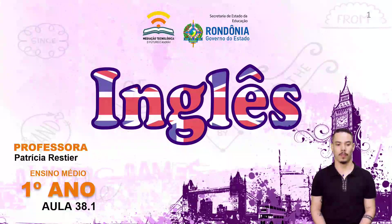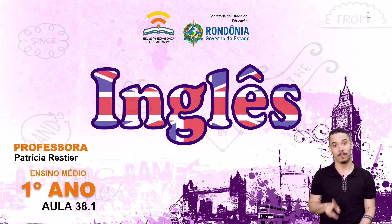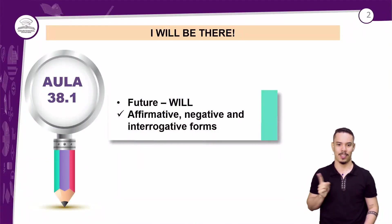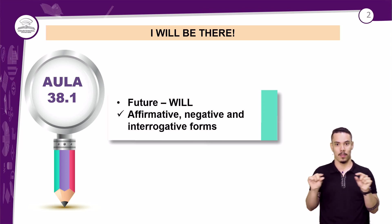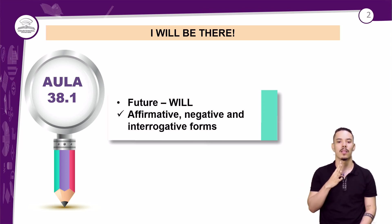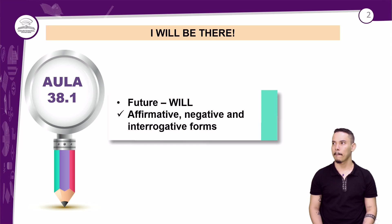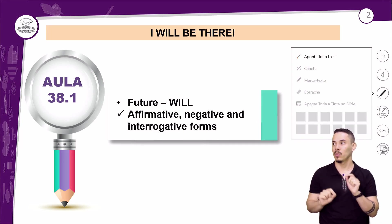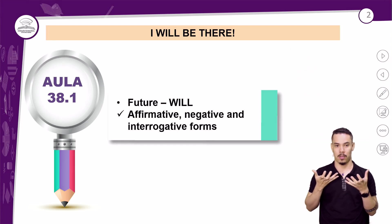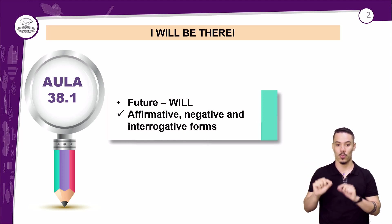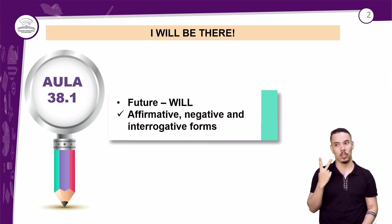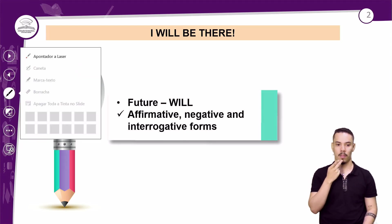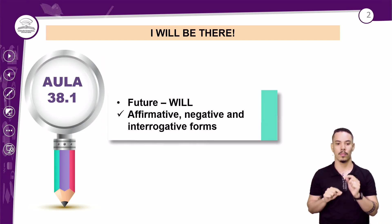Let's begin! We have the classic phrase from Friends: 'I will be there,' also known as 'I'll be there,' which means 'eu estarei lá.' The future will be with 'will,' and in English we have two forms of making the simple future. When I say two forms, I mean in simple tenses.